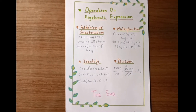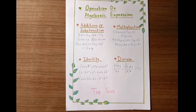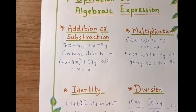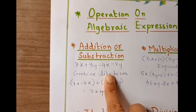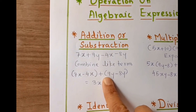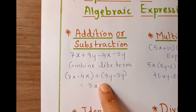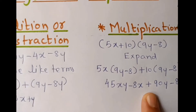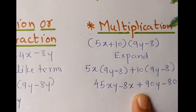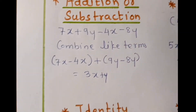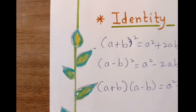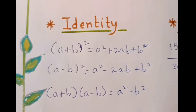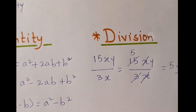The next and last one is operation of algebraic expression: addition or subtraction, then multiplication, then identity, and then division.